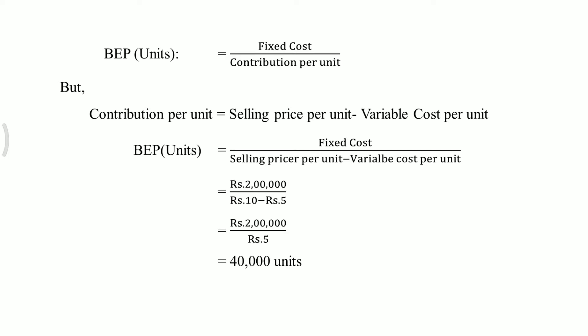Now we calculate BEP in units. The formula is fixed cost divided by contribution per unit, where contribution per unit equals selling price per unit minus variable cost per unit. Fixed cost is 2 lakh, selling price is rupees 10, and variable cost is rupees 5. So contribution is 10 minus 5 equals rupees 5. BEP units = 2 lakh divided by 5 = 40,000 units.